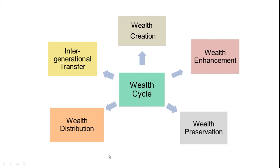Then comes wealth preservation, mainly corresponding to the pre-retirement and retirement period. During pre-retirement you need to be a little conservative and preserve the wealth you have accumulated. You no longer need to be as aggressive an investor as during the wealth enhancement stage — take lesser risk and be more conservative to secure your wealth for retirement goals. Finally, wealth distribution and intergenerational transfer — estate planning, deciding whom to transfer property to — should be planned and documented, so that everything passes to the right owner without confusion after your death.